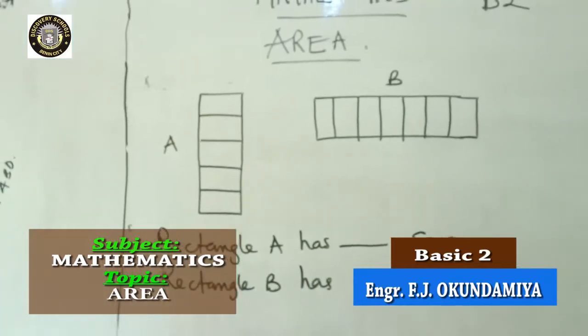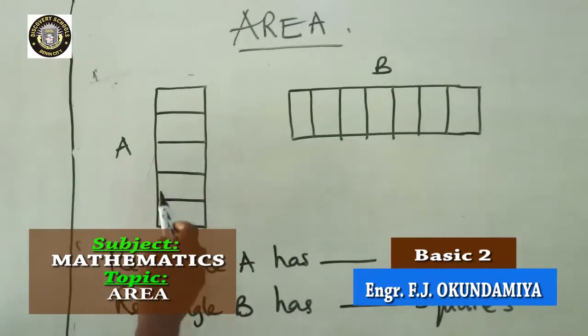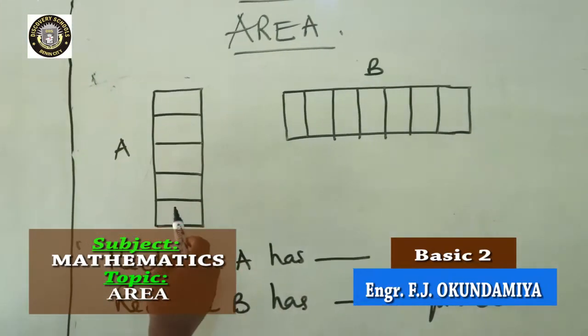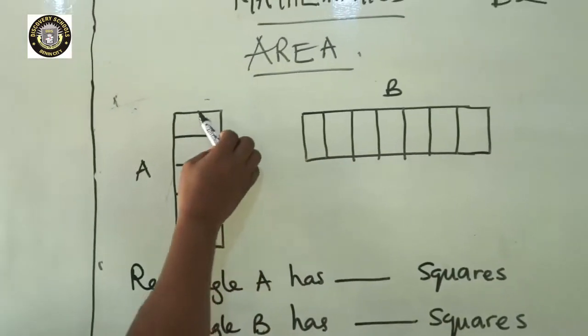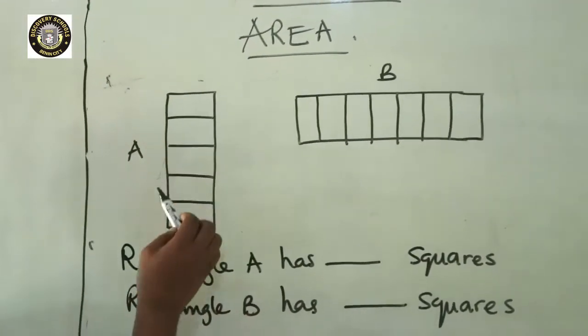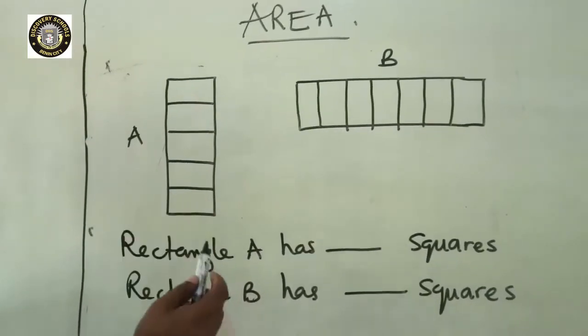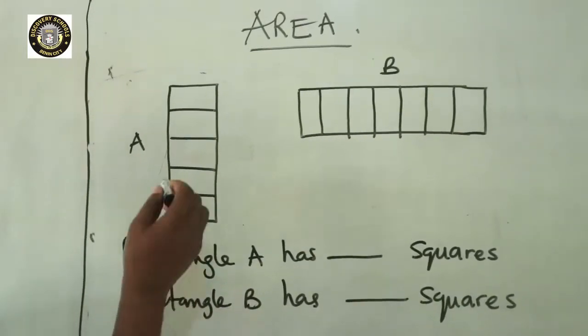If you look at what we have on board, we have shape A, rectangle and shape B. We say the enclosed space inside the shape is known as area. So how many boxes do we have inside this A?